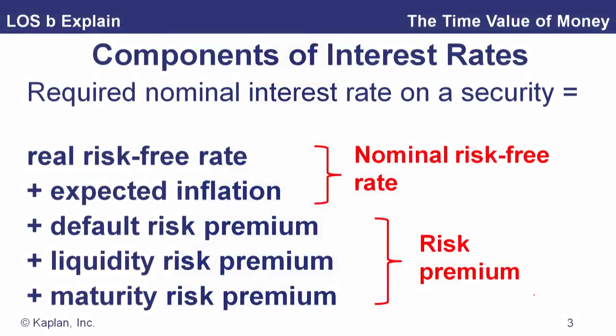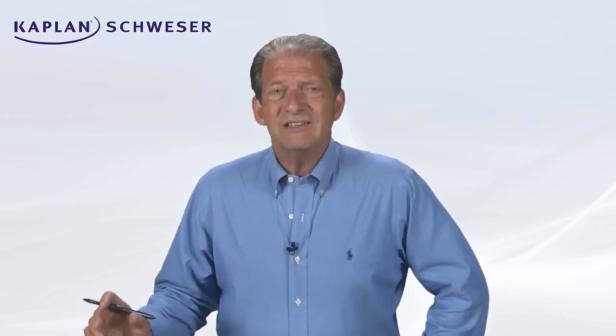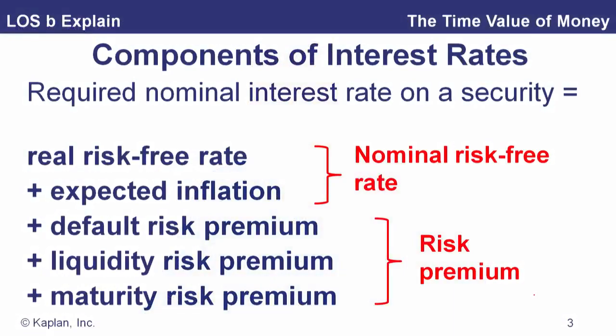The nominal risk-free rate includes the real rate — how much more stuff you get — plus the amount that the price level is expected to go up. Then if we start adding premiums for risk, we can get the required rate of return on a risky security. We have three premiums listed: the default risk premium, based on the probability that a bond won't make its promised payments; a liquidity risk premium, because some securities may trade at a price different from the current market price due to lack of liquidity; and a maturity risk premium — under normal circumstances, longer-term bonds carry a greater maturity risk premium than shorter-term bonds.